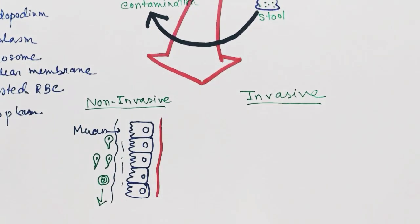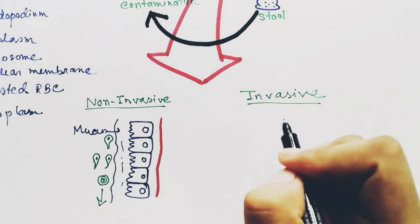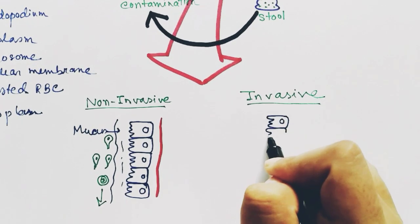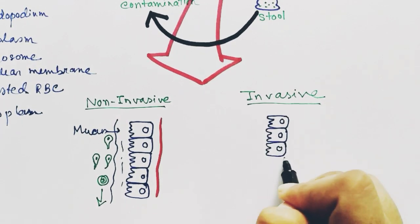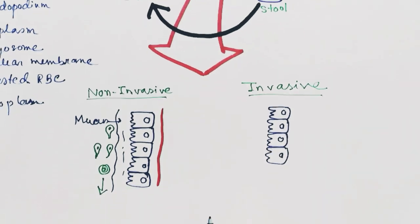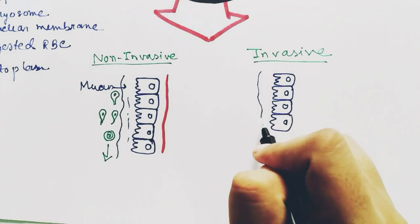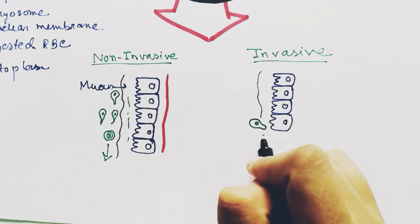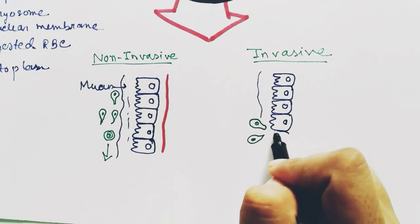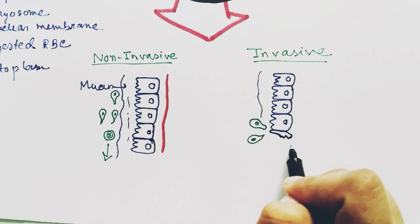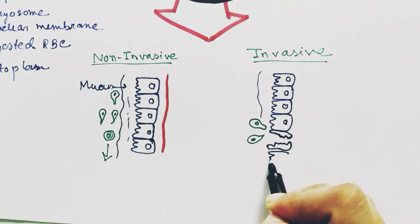But in case of invasive infection, it does not just glide over the mucus—it invades the mucus and destroys the epithelial cells. By destroying the epithelial cells, the trophozoites gain entry into our bloodstream.